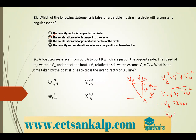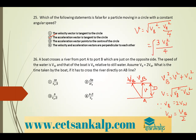Since VW = VB/2, substituting: V = √(VB² − VB²/4) = √(3VB²/4) = (√3/2)·VB. So the effective crossing velocity is (√3/2)·VB.